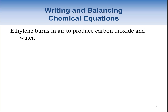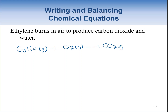Ethylene burns in air to produce carbon dioxide and water. Ethylene, C₂H₄, burns in air, meaning it reacts with the oxygen in air, and it produces carbon dioxide and water. This is a combustion reaction — a hydrocarbon, a compound composed of only carbon and hydrogen, reacting with oxygen to produce carbon dioxide and water.